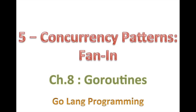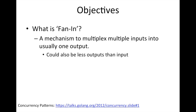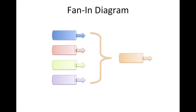So what is Fan-In? It's a mechanism — these are my own words — to multiplex multiple inputs into usually one output. It could be more than one output, but generally when you Fan-In you're going from more to less, so you have fewer outputs than inputs.